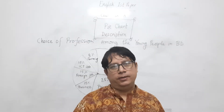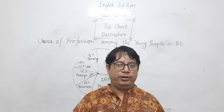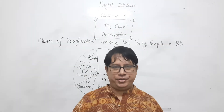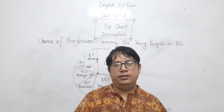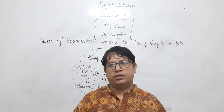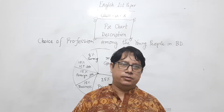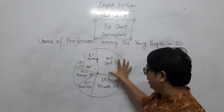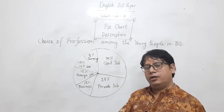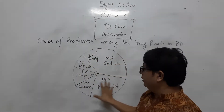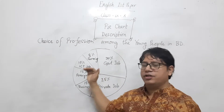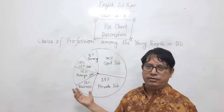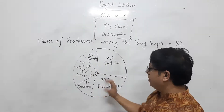Pie chart is an important topic of our English first paper. A pie chart is circular in design, like a wheel — as you can see behind me, this is a pie chart. The total circle represents 100 percent, and different parts of it are divided into different sections, each expressed as a percentage.